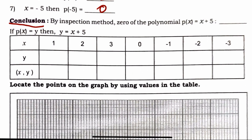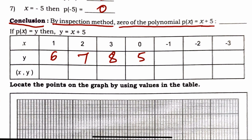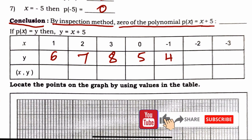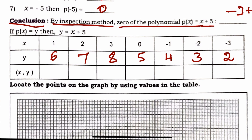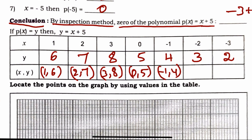By inspection, the zero of p(x) = x + 5 is x = −5. The coordinate pairs are: (1, 6), (2, 7), (3, 8), (0, 5), (−1, 4), (−2, 3), (−3, 2). These points can be represented on a graph to visualize the polynomial. We will continue this in the next class.